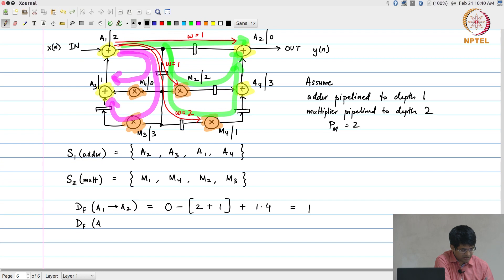Let us look at df from a1 to m2. In this case, once again, the schedule time of m2 is 2, the finishing time of a1 is 2 plus 1 equal to 3. Again, it would have been negative except for the fact that there is one delay over here. What I get is 4 plus 2, 6 minus 3 is equal to 3. What about the df from a1 to m4? In this case it is 1 minus 3 plus 2 times 4, so 1 minus 3 minus 2 plus 8, it is equal to 6.